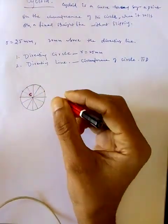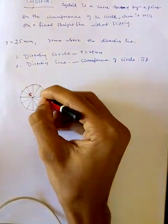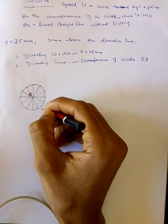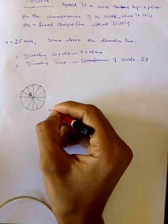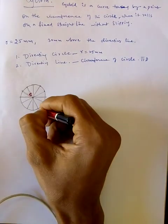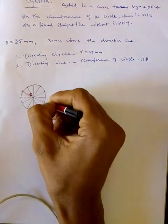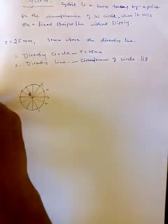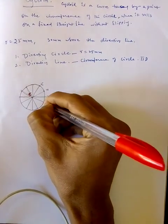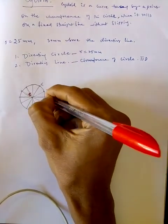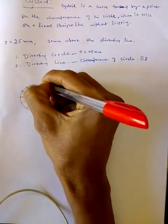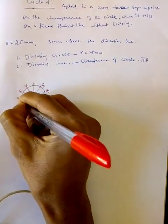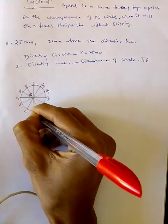Now we have 12 different points on the circle. Let us number them 1, 2, 3, 4, 5, 6, 7, 8, 9, 10, 11, 12.